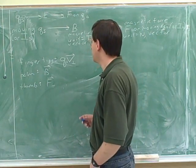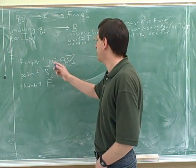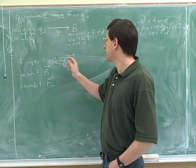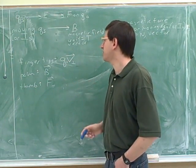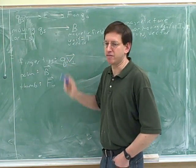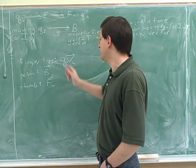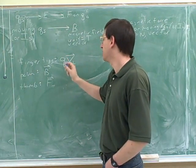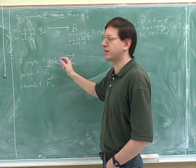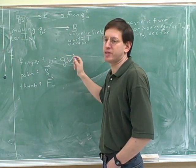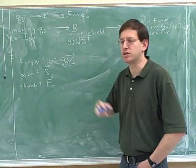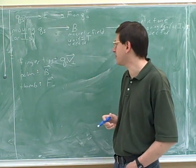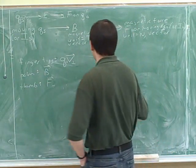Notice that your fingertips point in the direction of q times v, meaning we multiply v by q. What really matters is just whether q is positive or negative. If q is positive, qv points in the same direction as v. But if q is negative, qv points opposite to v — multiplying a vector by a negative number reverses its direction.